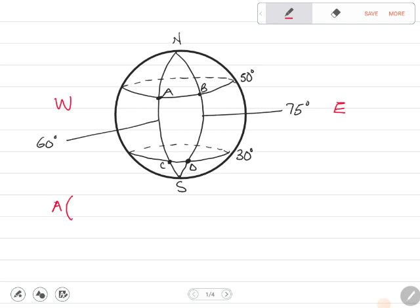First, which latitude is A on? A is on this latitude 50, you can see 50 there. That's where the latitude is here. And on which longitude is it in? It is on this longitude here. Now what's the value of this longitude? 60 degrees, which side? West.